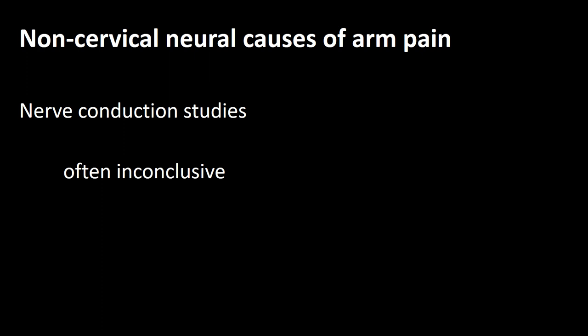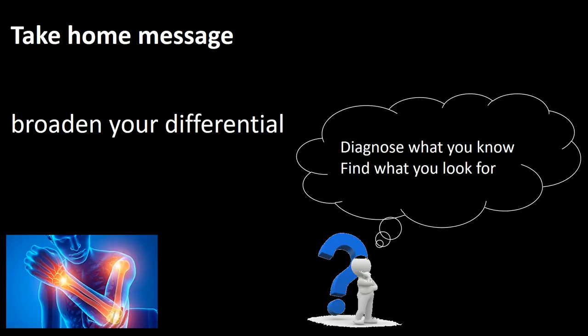Many times one is deciding whether the patient has carpal tunnel syndrome or a C5-6 disc. They may have both, and nerve conduction studies really fail to differentiate between the two. They are often inconclusive and one needs to go through the whole process of history, examination and special investigations, not simply relying on one of them. So the take-home message is: broaden your differential, as we diagnose what we know and find what we look for.